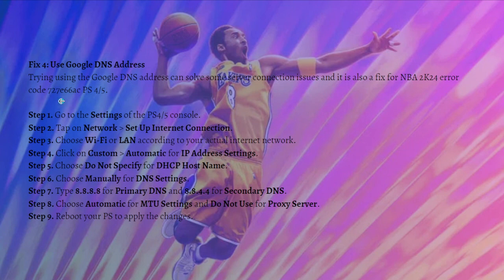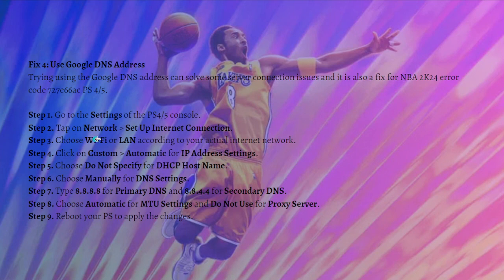Next, you can try using the Google DNS address. Using Google DNS can solve some server connection issues and is also a fix for the NBA 2K24 error code 727e66a6 on your PS4 or PS5. To do that, go into the settings of your PS4 or PS5 console.